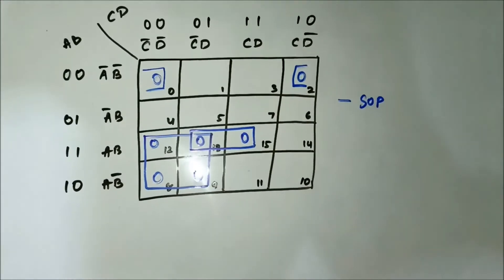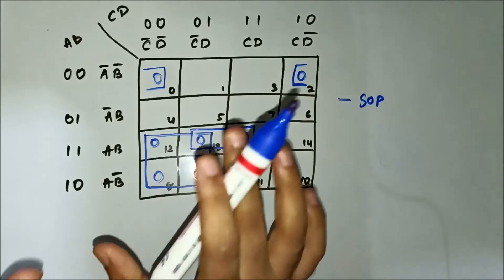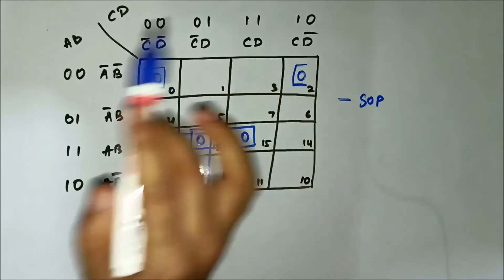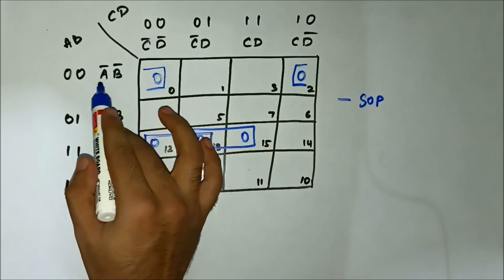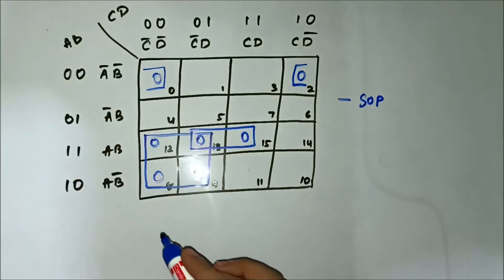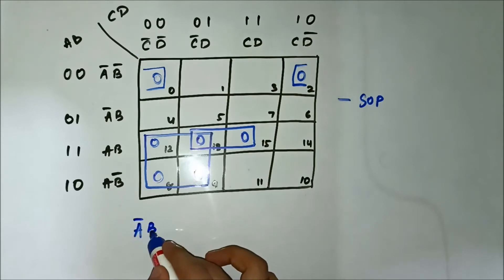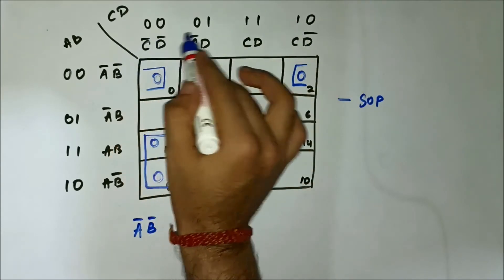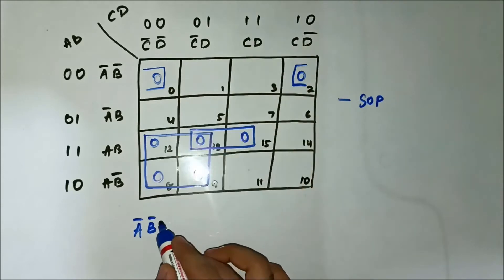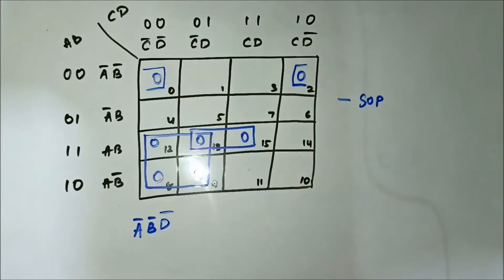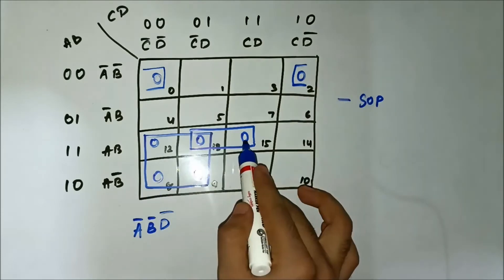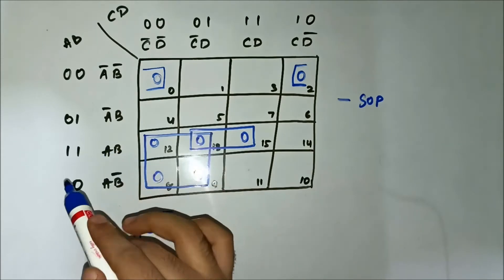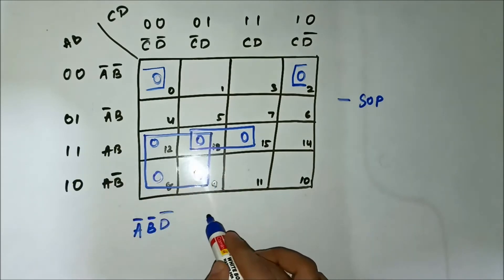We have formed all the groups; now we have to identify the common variables. For this pair involving cells 0 and 2, in the horizontal side we have A-bar B-bar common, so A-bar B-bar will be there. Next, for this pair involving cells 13 and 15, in the horizontal side we have AB common.